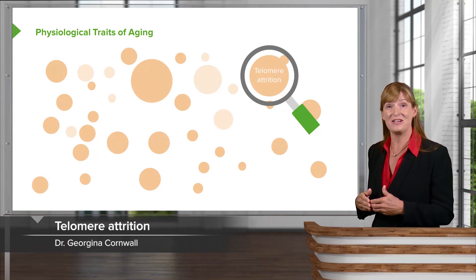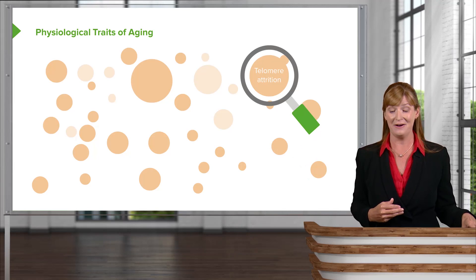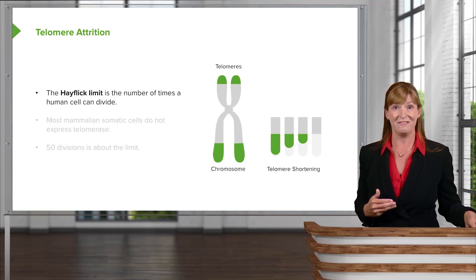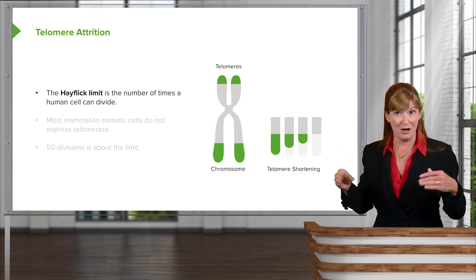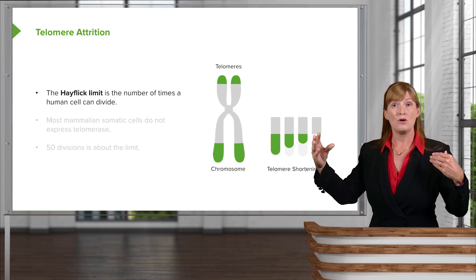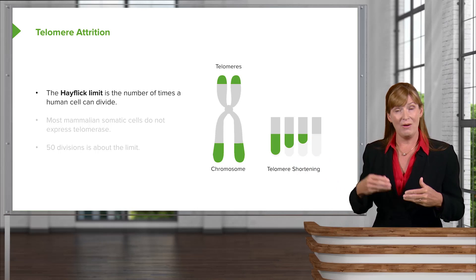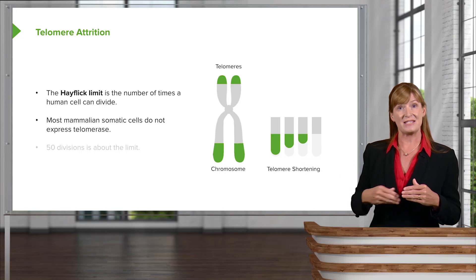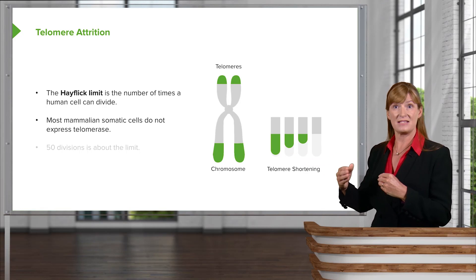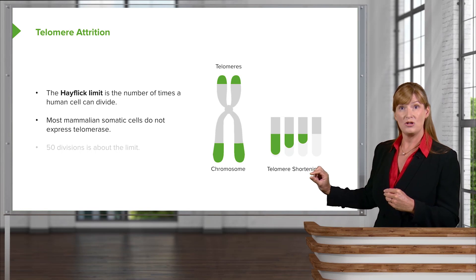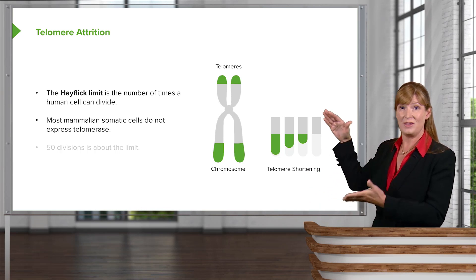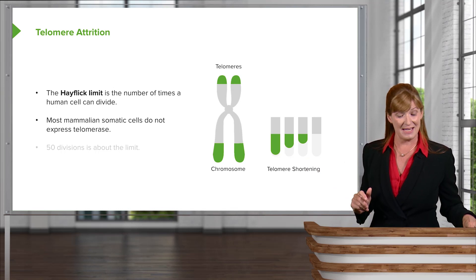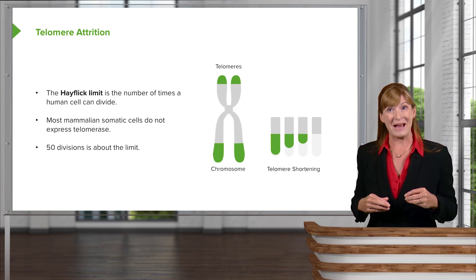Moving on to the next physiological trait of aging: telomere attrition. Telomeres shorten as cells go through divisions, and stem cells and cancer cells may have telomerase active, allowing them to continue to grow or regenerate telomeres. However, most somatic cells lose that capacity. The Hayflick limit suggests there are a limited number of cell divisions — approximately 50 — that somatic cells can go through before telomeres become short enough to start damaging sub-telomeric regions of the chromosome.